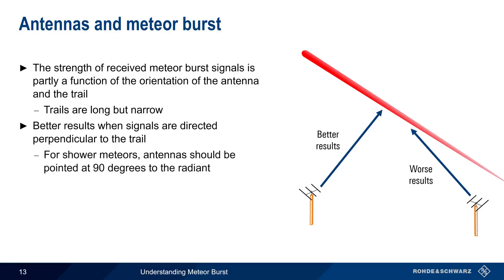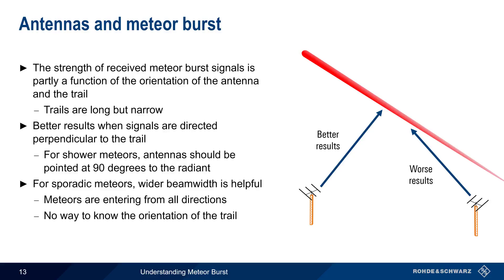In the case of shower meteors, which appear to be entering from a given point, or radiant in the sky, antennas would ideally be pointed at 90 degrees to the radiant. For sporadic meteors, on the other hand, a wider beam width antenna is more helpful. This is because, unlike shower meteors, sporadic meteors enter the atmosphere from all directions, and therefore there is no way to know, or to predict, the orientation of the trail.